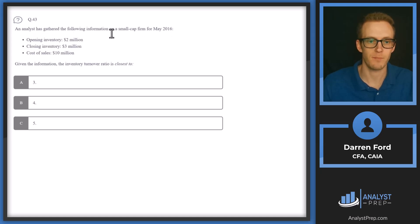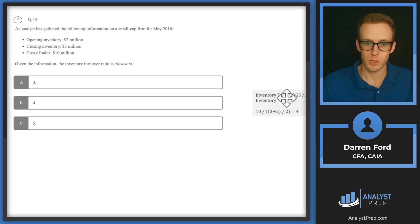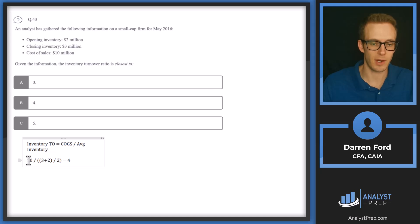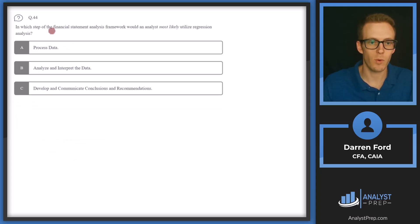Question 43: An analyst gathered data on a small-cap firm for May 2016 — opening inventory of $2 million, closing inventory of $3 million, and cost of sales of $10 million. Inventory turnover equals cost of goods sold divided by average inventory. Average inventory is (2 + 3) / 2 = 2.5 million. So 10 / 2.5 = 4. Answer B.